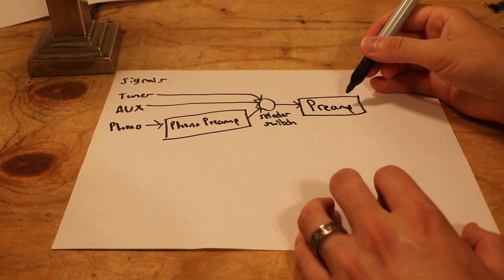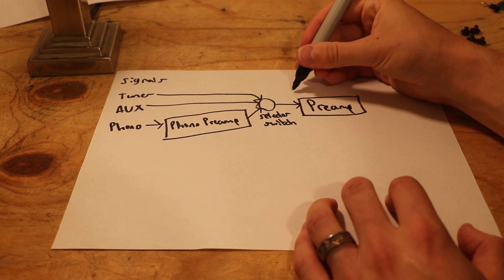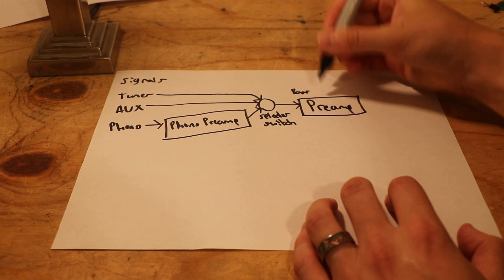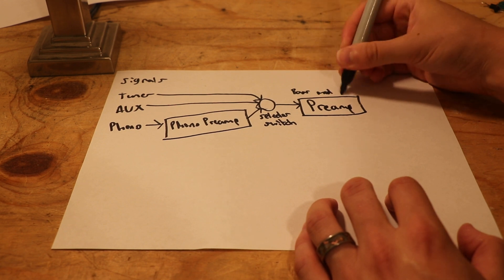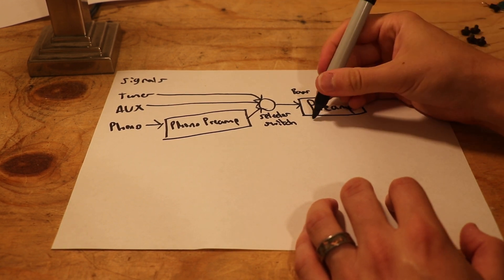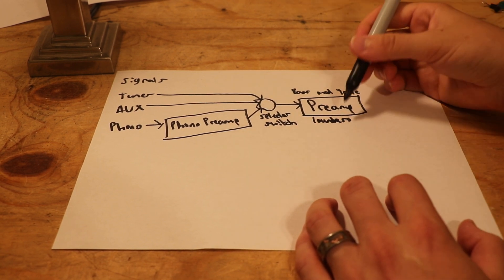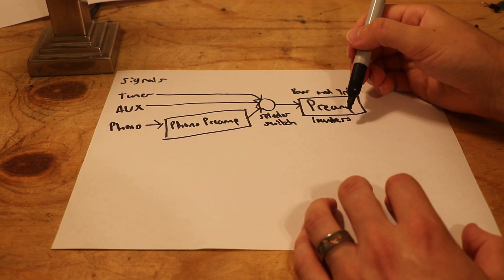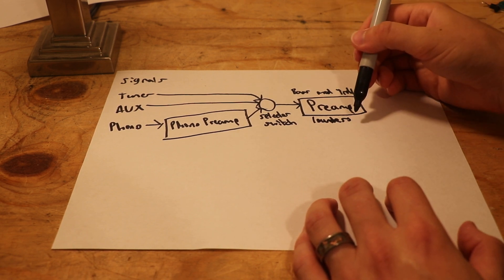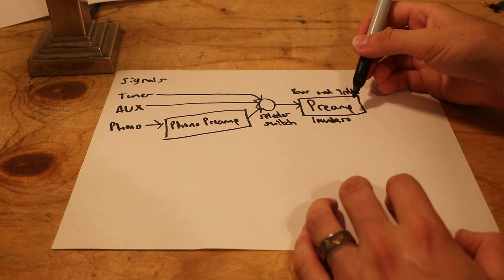Now what the preamplifier is doing is controlling the bass, the mids, and the treble, if you're equipped with those things. Maybe you have the loudness button. The preamp is doing all these things. It's kind of conditioning the signal so that it's ready for the power amplifier to make it happen.